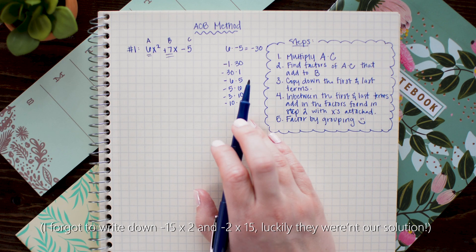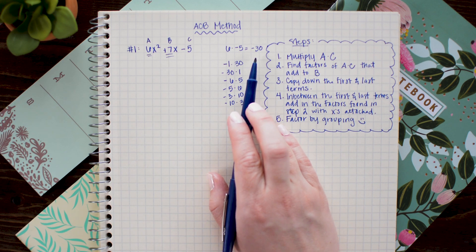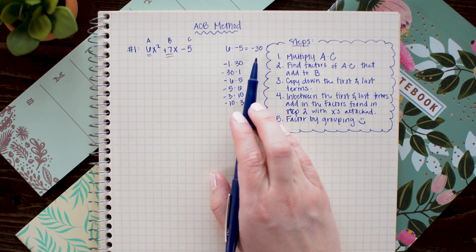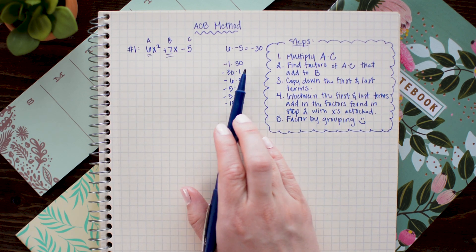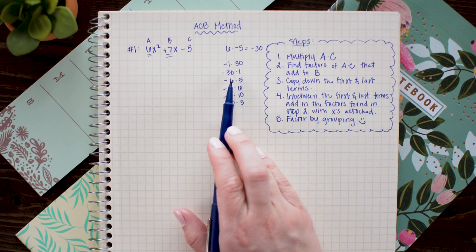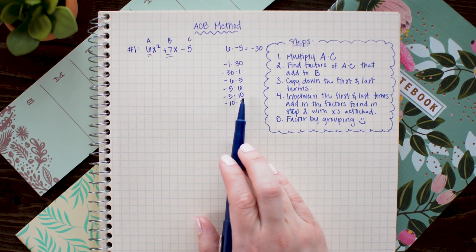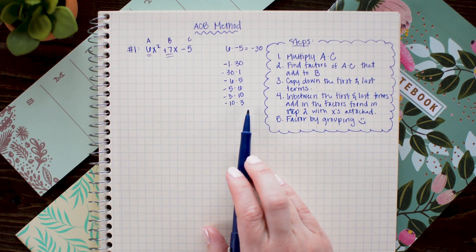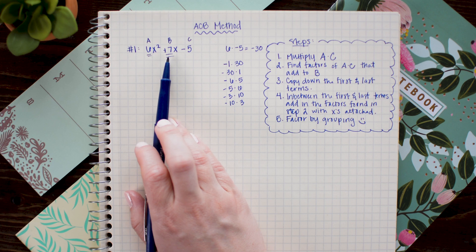It's important to note here that if you have a negative number as your product of a times c then you want to make sure to list all the possible combinations of that negative value. So notice how I had negative 1 times 30 as well as negative 30 times 1. Negative 6 times 5 as well as negative 5 times 6. Negative 3 times 10 as well as negative 10 times 3. Now that's important because in the next step I'm going to look for the pair of factors that add to positive 7.